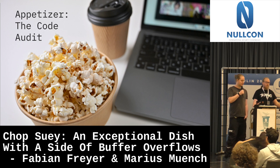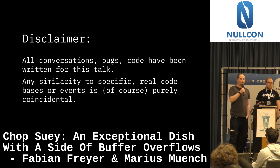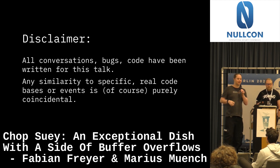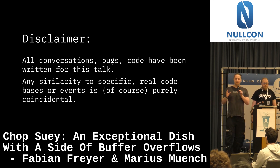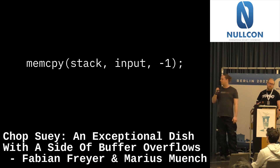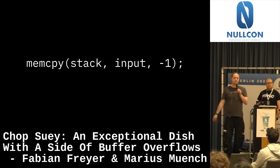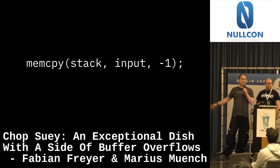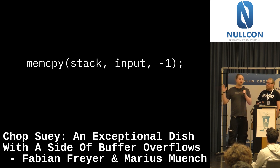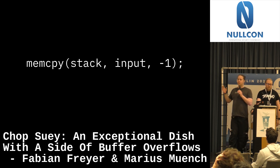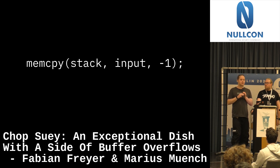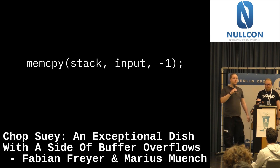Quick disclaimer before this: all of this is fictional. None of the code we will be showing you is in any codebases out there. Any similarities between code that we'll be showing you and other codebases is purely coincidental. So in this hypothetical scenario, I'm reading some code and I see this memcpy. I think, hey, that sounds wrong. I'm copying input onto the stack and copying minus one of it — there was some size issue. What happens here is that minus one will be interpreted as a very large number, so we're copying a lot of input onto the stack.